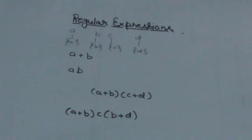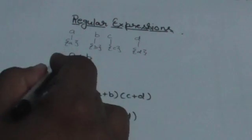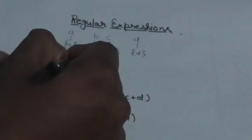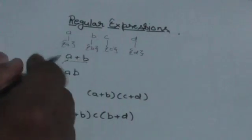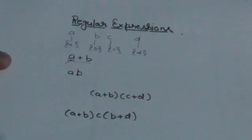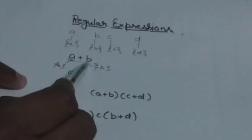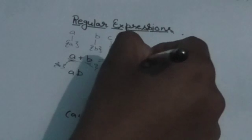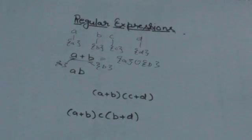Now we have to find the regular set corresponding to the regular expression a+b. The regular set corresponding to a is the set having one element a, and the set for b has one element b. The regular set corresponding to a+b will be the union of these two sets, so it will contain only two elements: a and b.